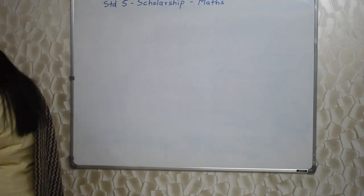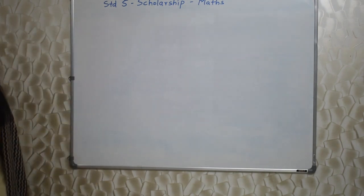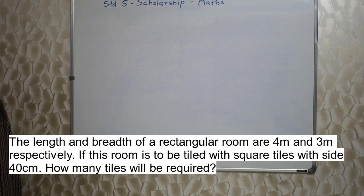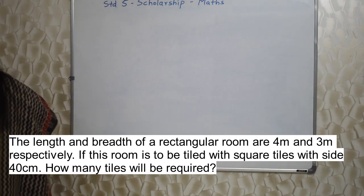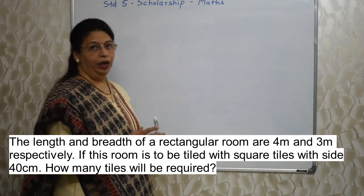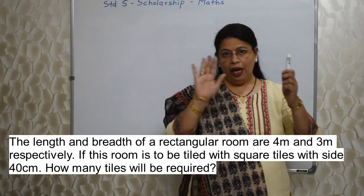The first sum will appear on your screen. The length and the breadth of a rectangular room are 4 meter and 3 meter respectively. If this room is to be tiled with square tiles with side 40 cm, how many tiles will be required? First of all, you should know this is a sum of area because we need to tile.